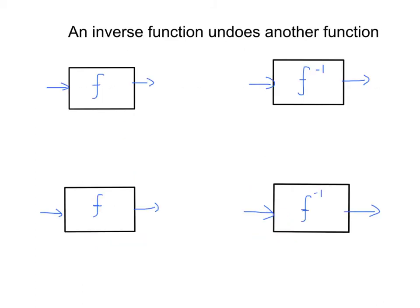Now that we have our notation down, let's give an example of what we mean by a function undoing another function. Imagine I have a function f — using the magic box analogy — if I input 3 into the function, it outputs 5, and if I input 7, it outputs 9. What would the inverse do? The inverse just does the opposite — it undoes what was already done. So if you input 5 into the inverse, it takes you back to 3. And if you input 9 into f inverse, you get an output of 7.